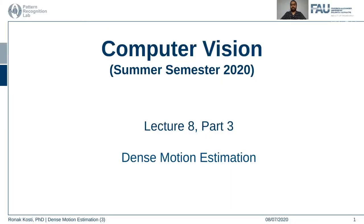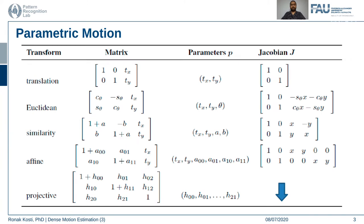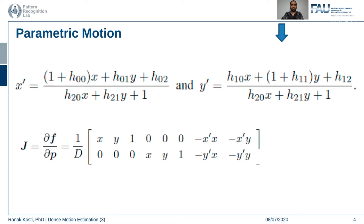Hello everyone and welcome back to the computer vision lecture series. This is lecture 8, part 3. We are going to continue talking about dense motion estimation. In the last lecture we saw how parametric motion can be resolved using nonlinear least squares methods for different transformations — translation, Euclidean, similarity, affine, or projective — using their related Jacobians to find the motion vector between two frames or images.